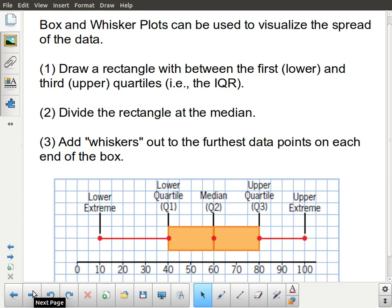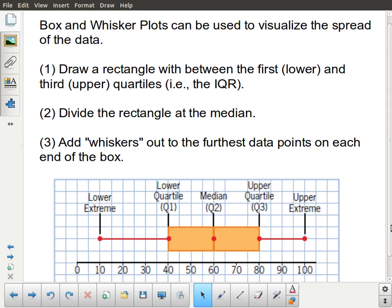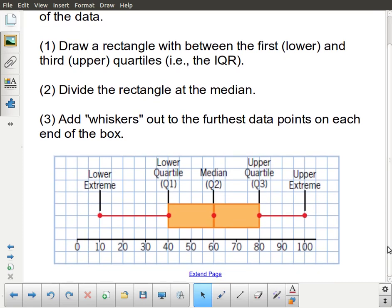One of the ways that we visualize spread is using something known as a box and whisker plot. I've got an example down here at the bottom of the page of a box and whisker plot. You can see the box part is a rectangle. The median is the measure of central tendency that we would make use of for a box and whisker plot.